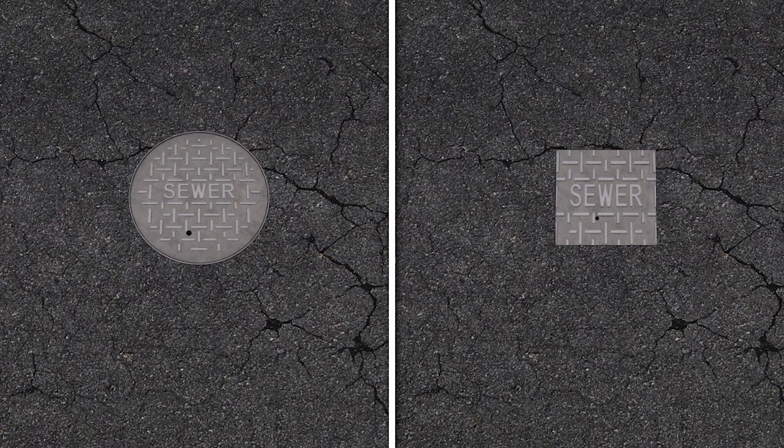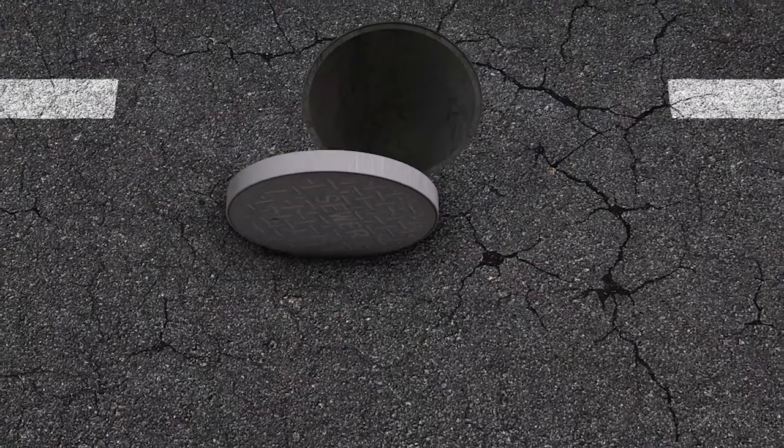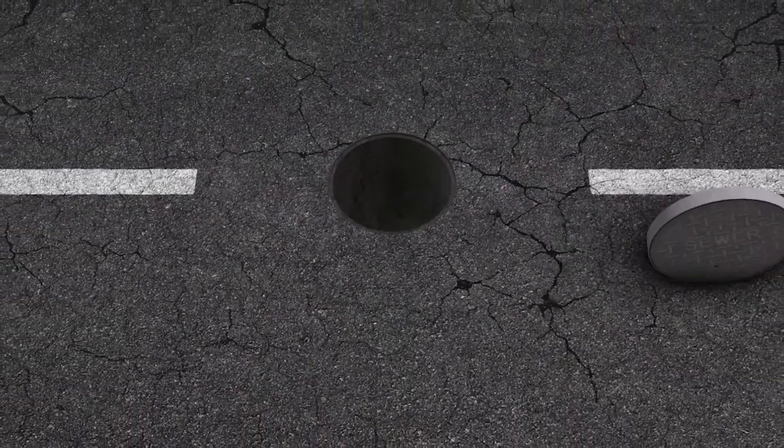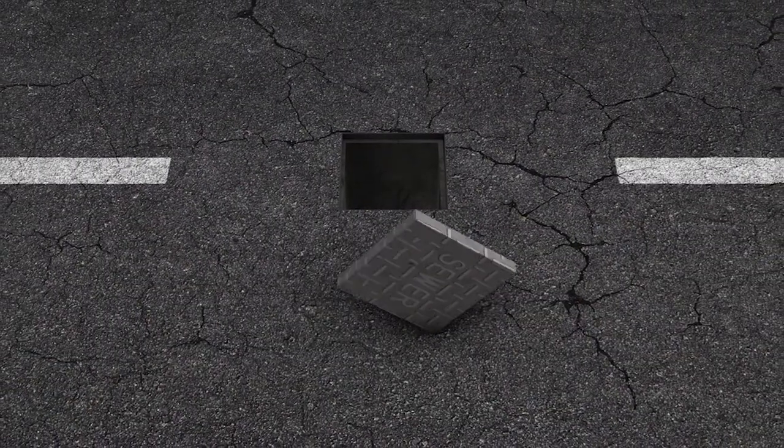Which leads to the last point, if the manhole cover needed to be moved or transported, it could be rolled along the ground like a heavy wheel. With a square cover, you would have to continuously and awkwardly flip it along the ground.